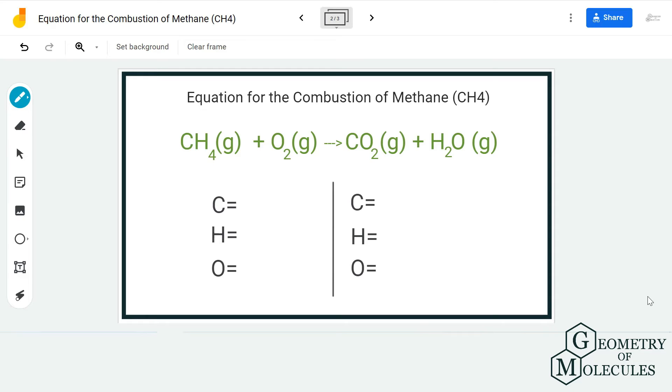For the reactant side we have one carbon atom, four hydrogen atoms, and two oxygen atoms. On the product side we have one carbon atom, three oxygen atoms (two plus one), and two hydrogen atoms.